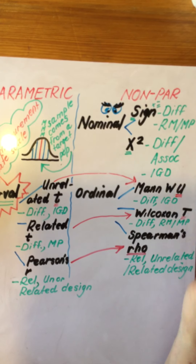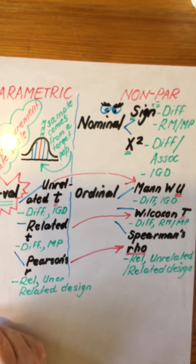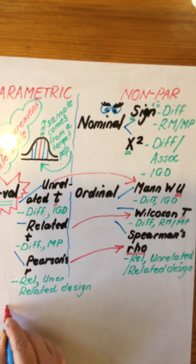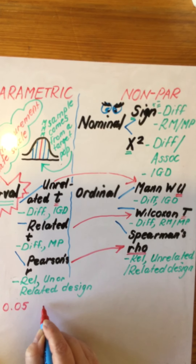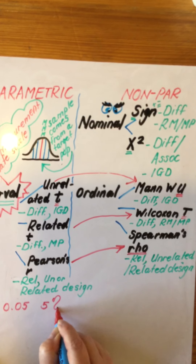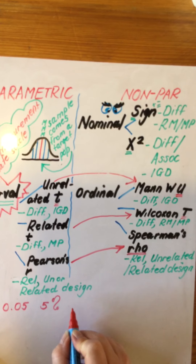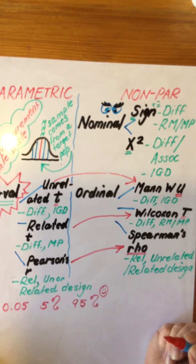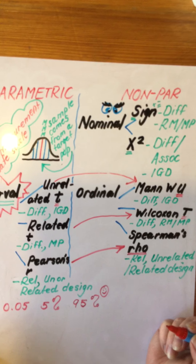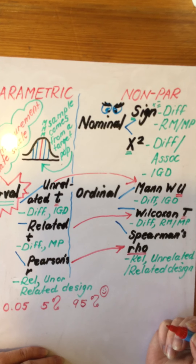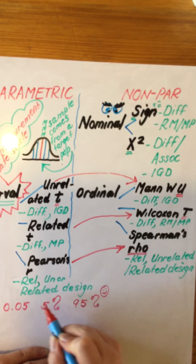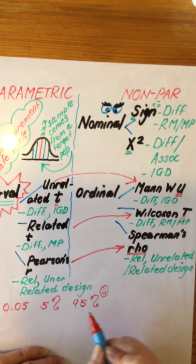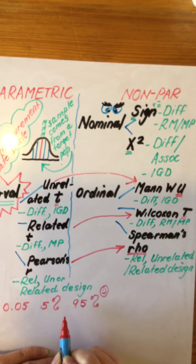Now we know the test we're going to use. Psychologists use p ≤ 0.05, which is a 5% level of significance. That means we can be 95% sure that our findings are real and valid — that the difference we are seeing is true, as is the relationship if we are looking at a correlation. And only 5% is given to chance.